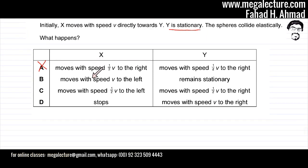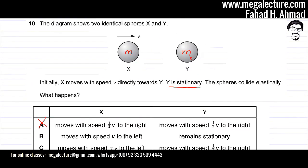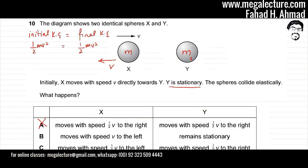Option B states that X moves with speed V to the left and Y remains stationary. The kinetic energy is conserved here because X still travels with speed V, giving a final KE of half M V squared — equal to the initial KE of half M V squared.